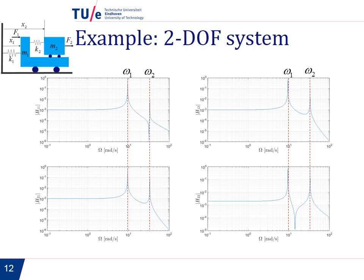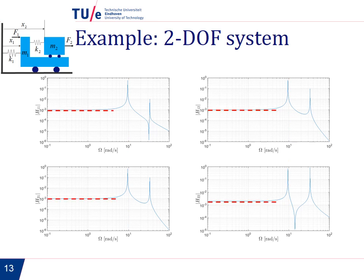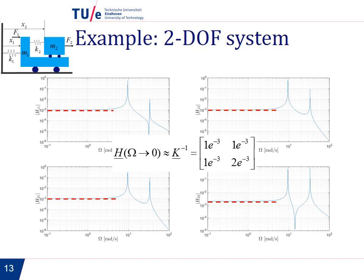The other interesting thing about these plots is that we see that when the frequency goes to zero, we get a horizontal line. And what is the height of this line? Well, when the frequency goes to zero, H tends to the inverse of K. And for this particular example, these are the values. So if we calculate the inverse of K, we find these values, and that is exactly what you see here when the frequency goes to zero.